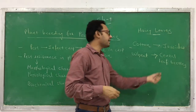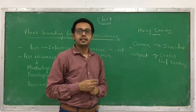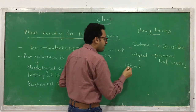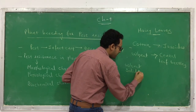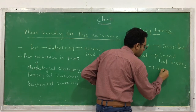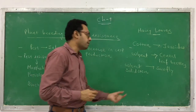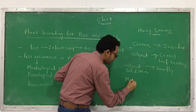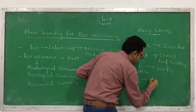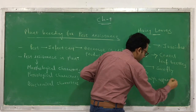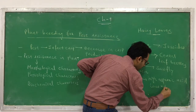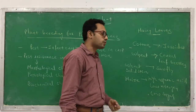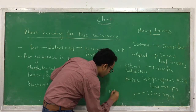Wheat plants possess trichomes and are resistant against cereal leaf beetles. Similarly, wheat plants which have a strong or solid stem are resistant against stem borer. For example, the maize plant with high aspartic acid content, low nitrogen, and low sugar content — those maize plants which have such characteristics are resistant against maize stem borer.